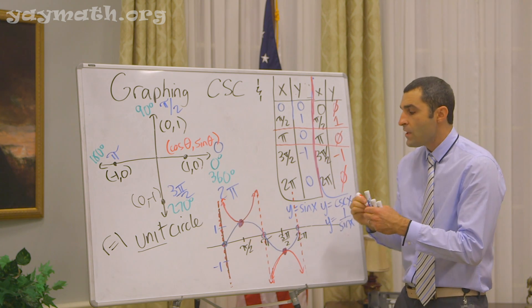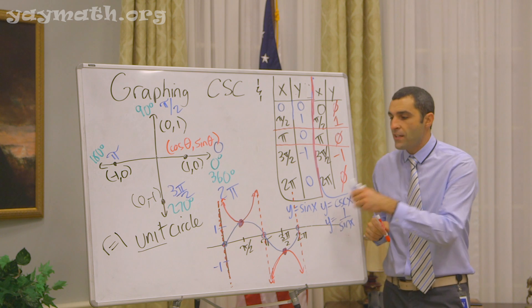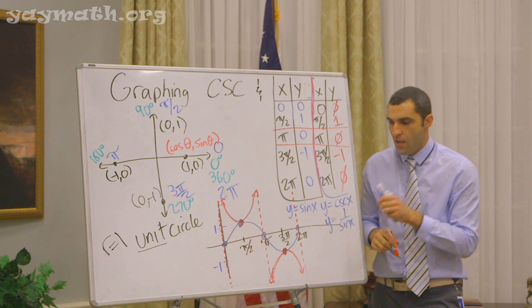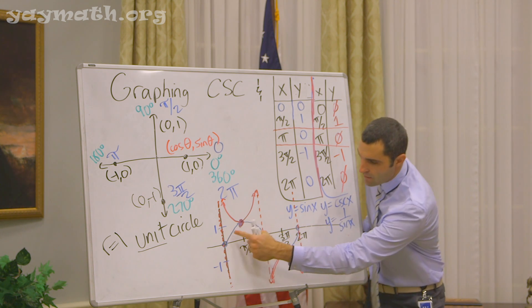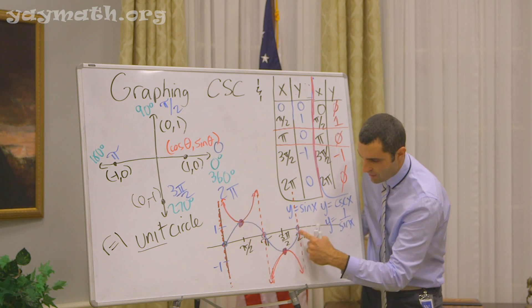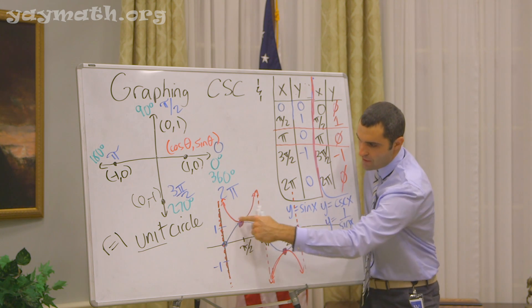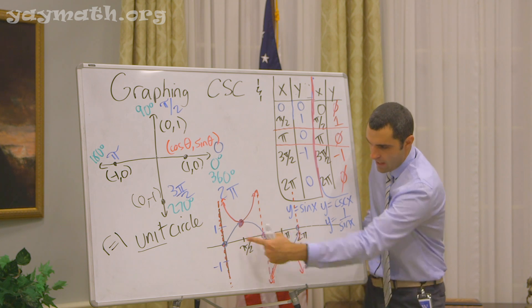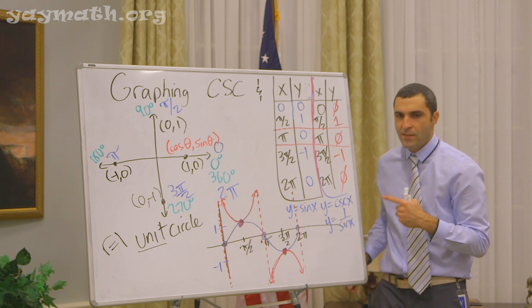If you know anything about asymptotes, you get this effect — you come close to the asymptote, you flirt but never touch. Get close and close and close but you can't touch them. So the cosecant graph is the red stuff, and the sine is the blue stuff.